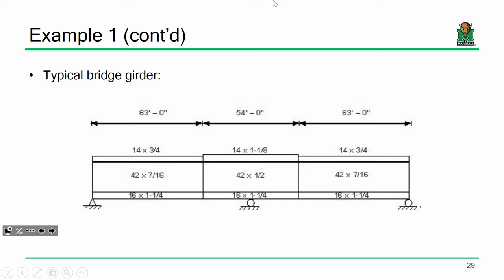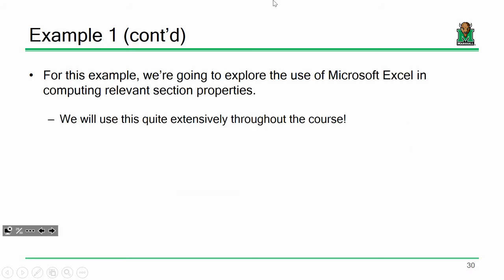The bottom flange, however, is the same across the board — all one and a quarter inch. There's also a framing plan associated with this showing cross-frame layouts, but we don't really need that for what we're talking about right now, so I left that out.